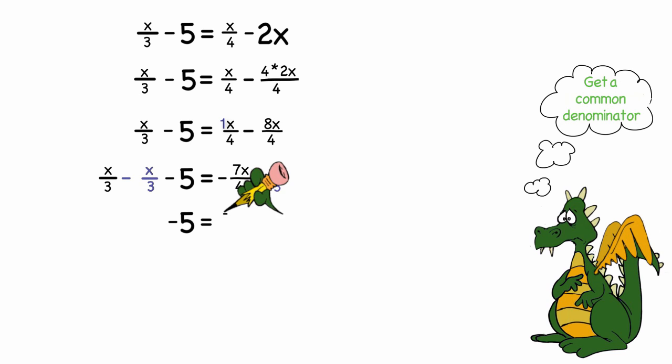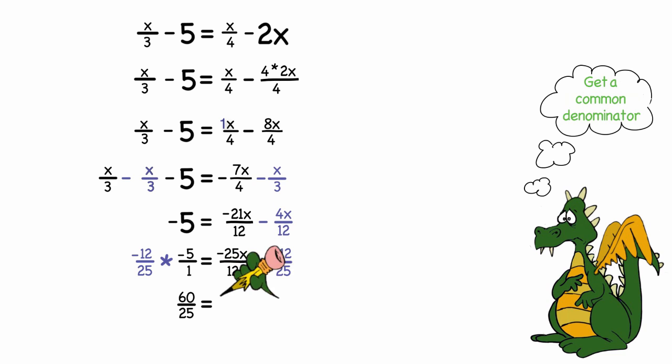Again, I'm going to need to get a common denominator, in this case, it would be 12, and when I combine like terms, I will get negative 5 is equal to negative 25x over 12. Next I'll need to multiply both sides of the equation by the reciprocal of negative 25 over 12, and that would give me x is equal to 12 over 5, or 2 and 2 fifths.